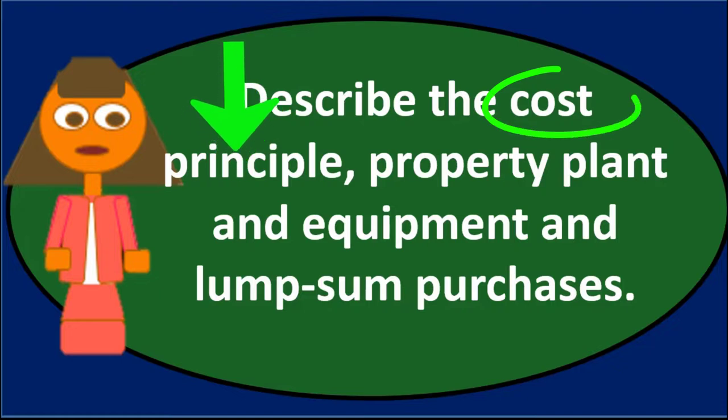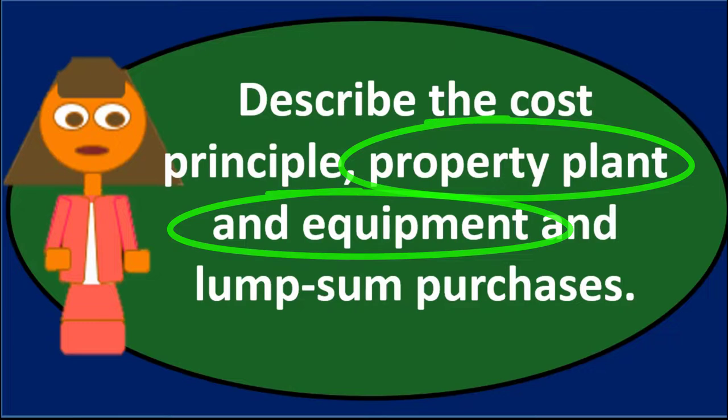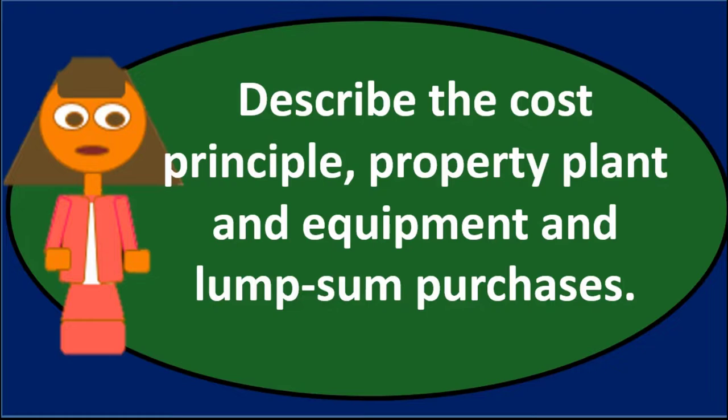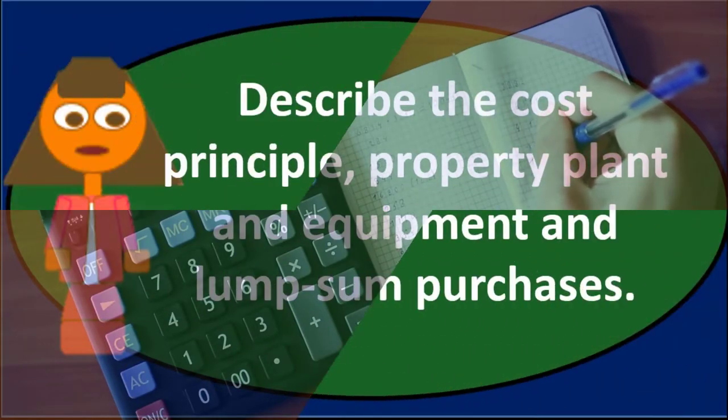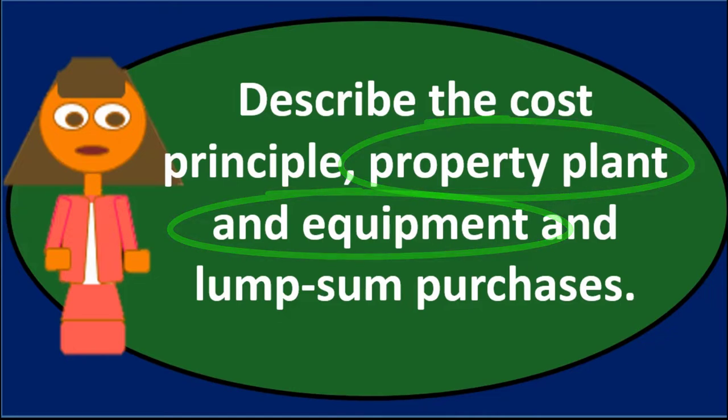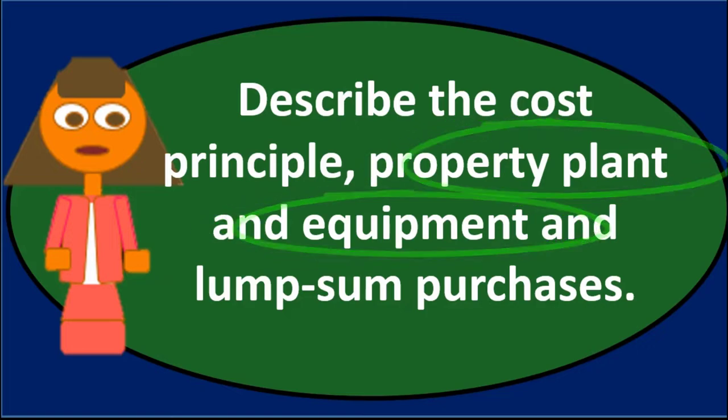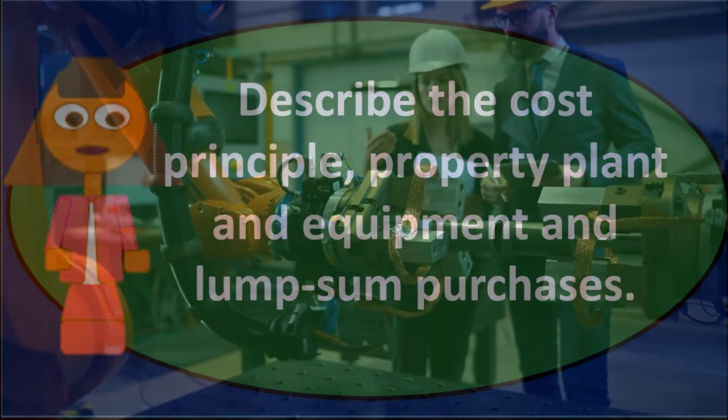When discussing the cost principle in relationship to property, plant and equipment, the cost principle means we're going to record the property, plant and equipment at cost. This also means we're going to include any expenditures necessary to get that asset in place and ready for its use within the business.